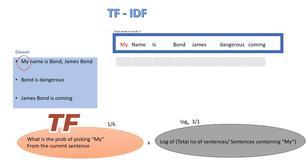It is the probability of picking the current word from our sentence. So out of six words in the first sentence, we have one 'my'. So the TF becomes one by six.